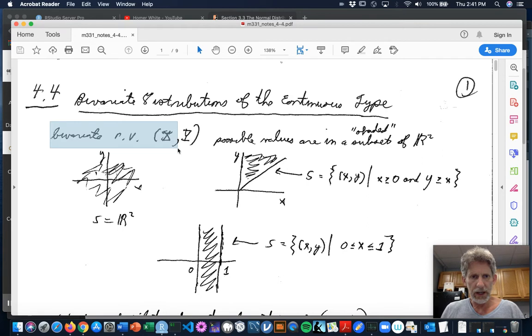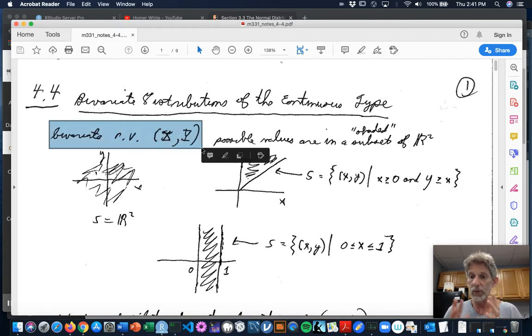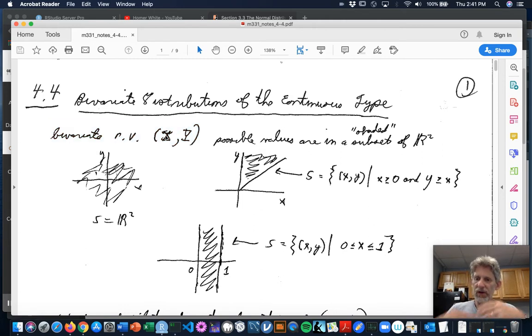So again, we have a bivariate random variable in mind, so an ordered pair capital X comma capital Y. And the possible values are again going to be a subset of the XY plane, subset of R2.